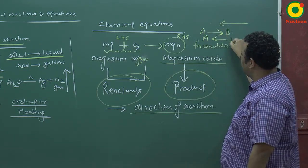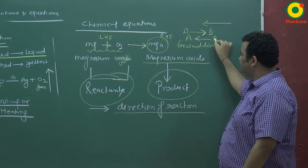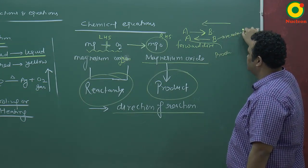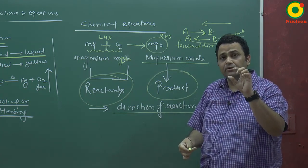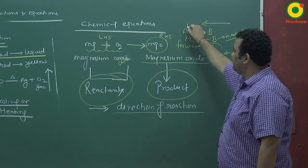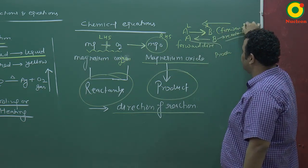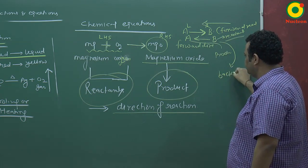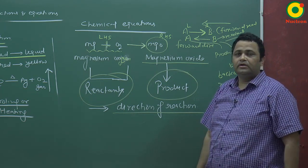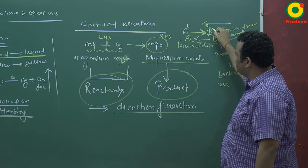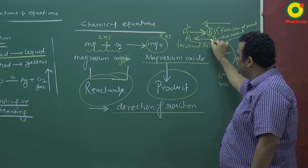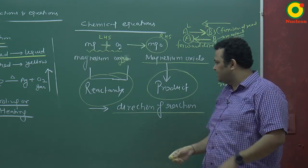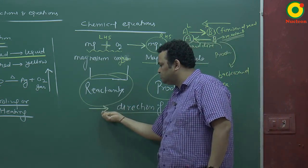If the arrow is in the forward direction — left to right — this is the forward reaction. If the arrow points backward, this is the backward reaction. So: if the arrow points towards B, then B is the product and A is the reactant. If the arrow comes from B, then B is the reactant and A is the product. Reactant and product are decided by the direction of the arrow — it shows the direction of the reaction.